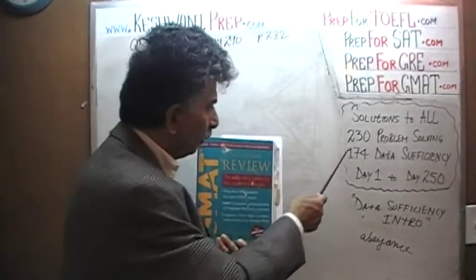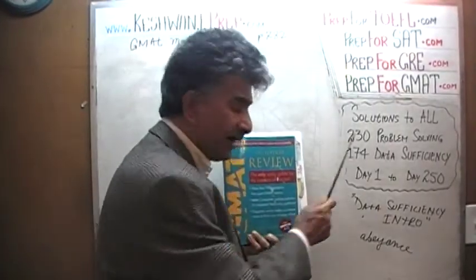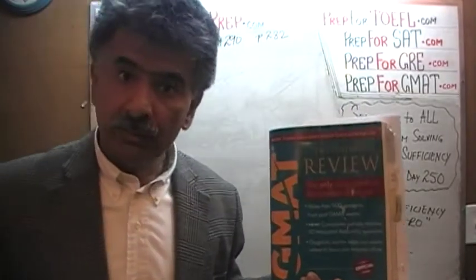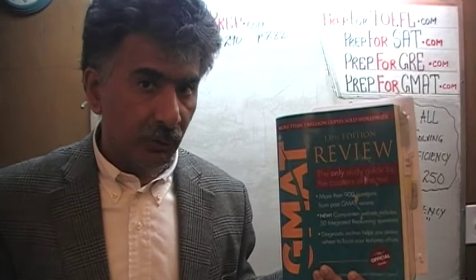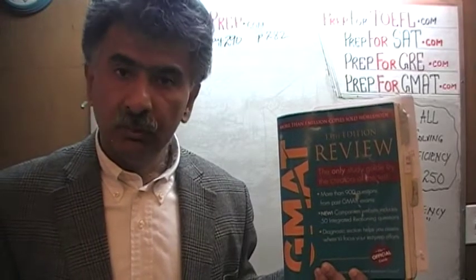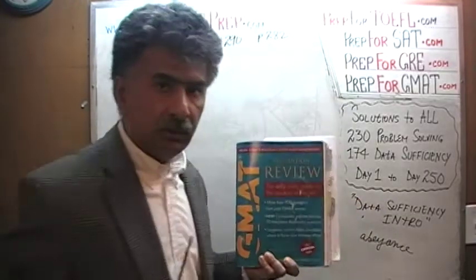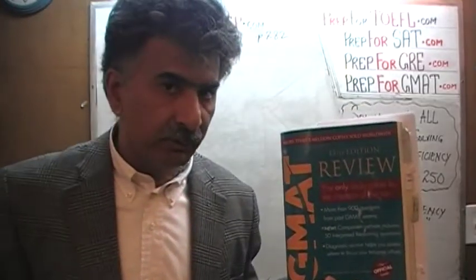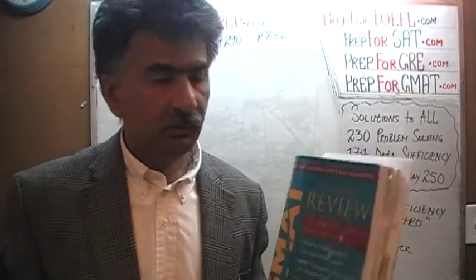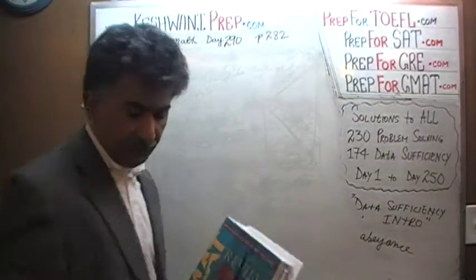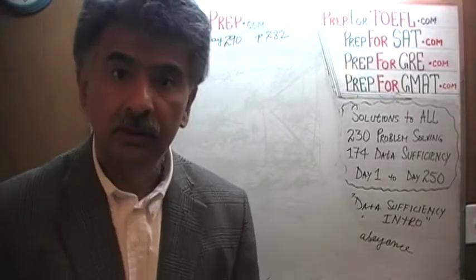The book contains 230 problem-solving questions and 174 data sufficiency questions. We have already solved every single math problem from the book. If you're interested in watching any of the original solutions, you will find them from day number 1 through 250. Right now we are in the process of redoing the problems and we are on page number 282. Please turn to it — the very first problem on the page, problem number 79.